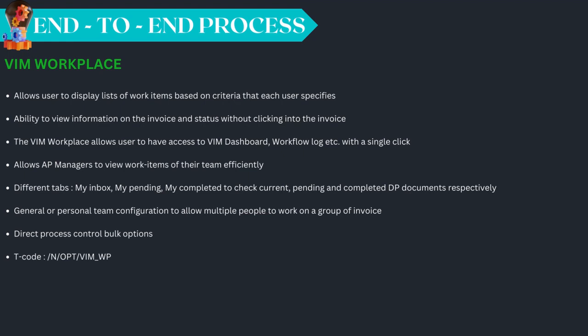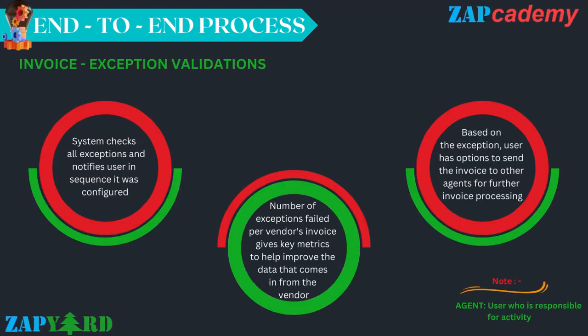Now let's move ahead to understand the different exception validations that an invoice must go through. The system checks through all exceptions and notifies the user in the same sequence as configured. Based on the exception raised, the user can either send the invoice to other agents for further processing or act upon it themselves to resolve the exception. The number of exceptions failed per vendor invoice helps gather key metrics to improve incoming vendor data. Once all exceptions are resolved, the invoice can proceed for further processing.